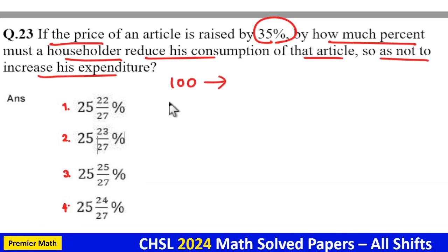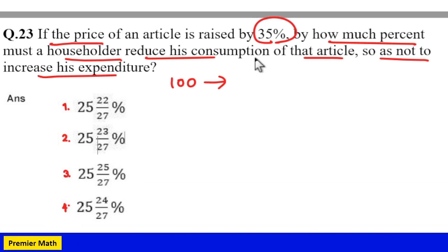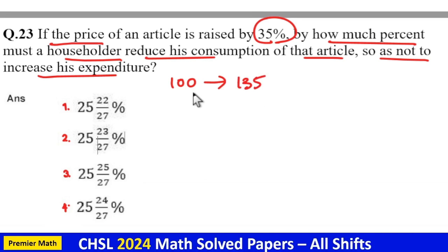Consider initial rate as 100 rupees. Then it is increased by 35 percent, means final price is 135 rupees.